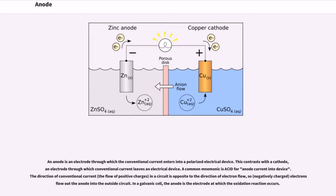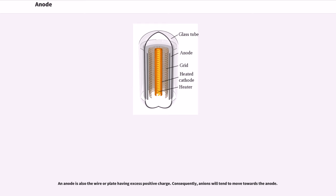In a galvanic cell, the anode is the electrode at which the oxidation reaction occurs. An anode is also the wire or plate having excess positive charge. Consequently, anions will tend to move towards the anode.